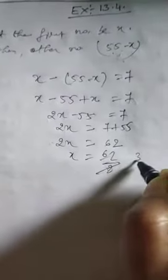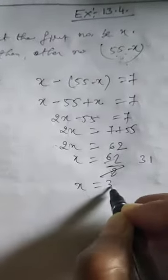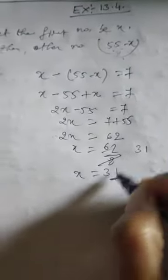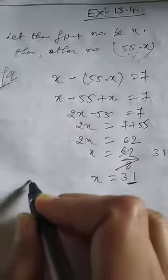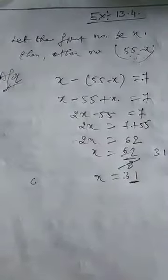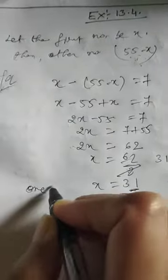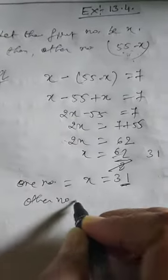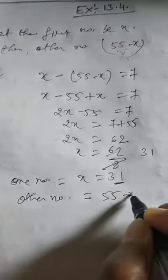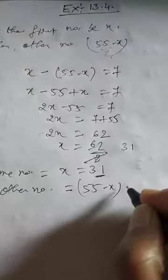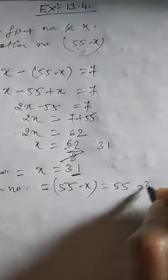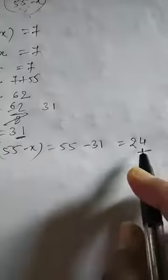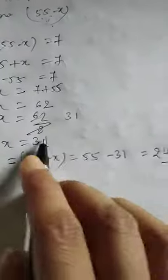So x is equal to 62 divided by 2, which gives x equal to 31. One of the numbers is 31. Now the other number is equal to 55 minus x, so 55 minus 31 equals 24. One number is 24, the other number is 31.